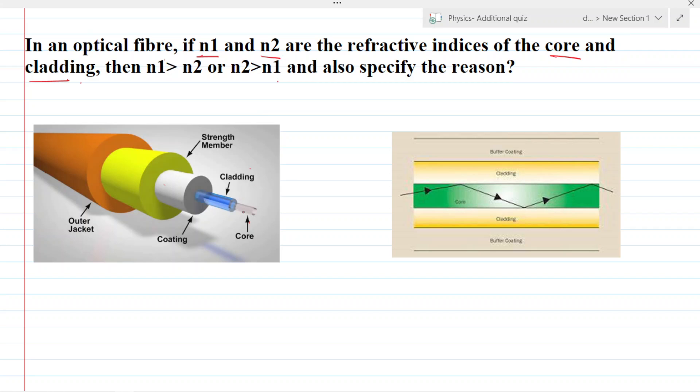So in optical fiber, we can see the inner part is known as core. This is the core, and the layer just above it is known as cladding. So basically, this optical fiber works on the principle of total internal reflection.